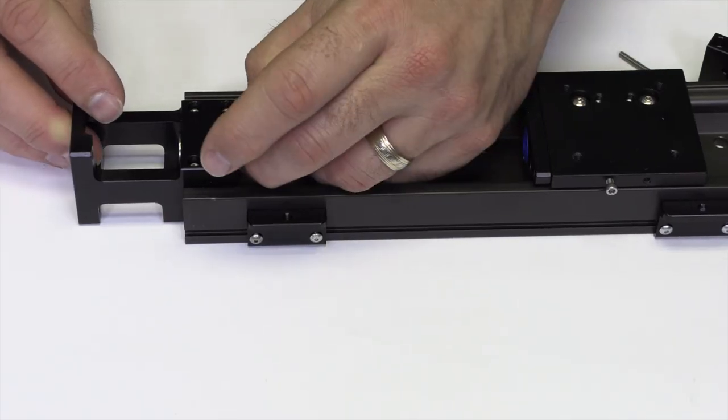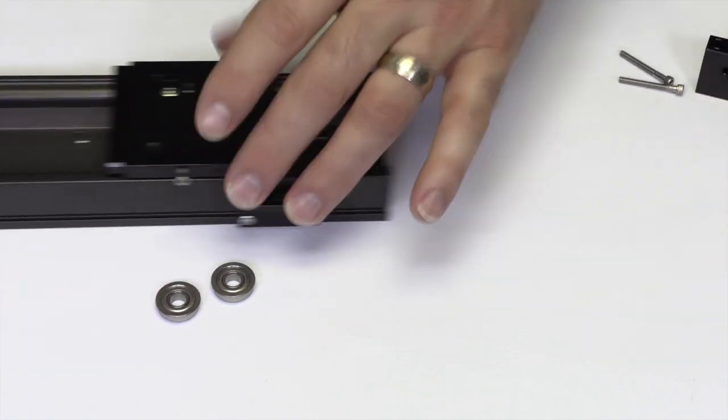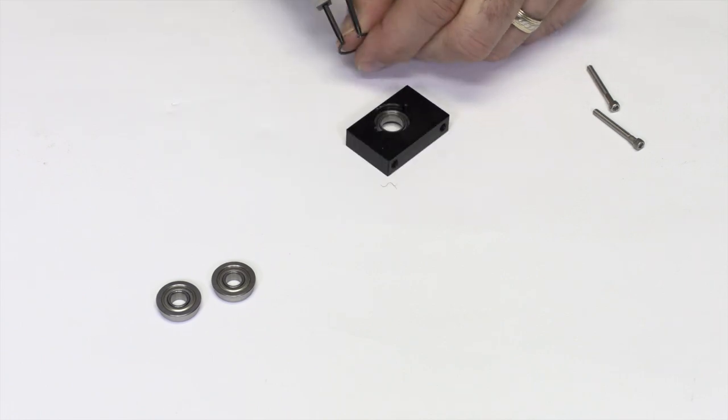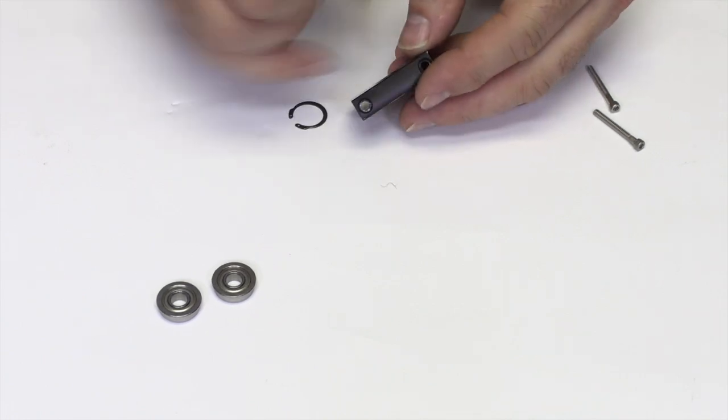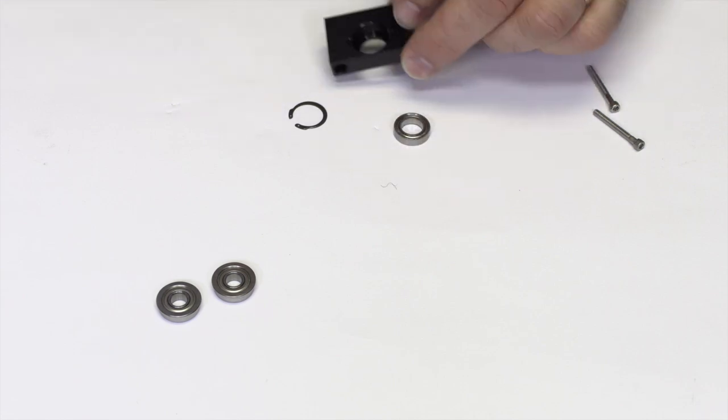We can remove the three bearings from the slide. Two on the motor side and one on the idler end. The bearing on the idler side will require retaining ring pliers to remove the retaining ring or C-clip. These bearings will be replaced with new bearings from the rebuild kit.